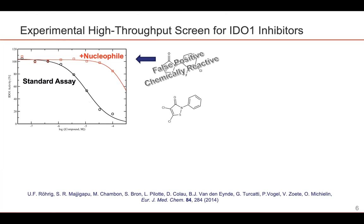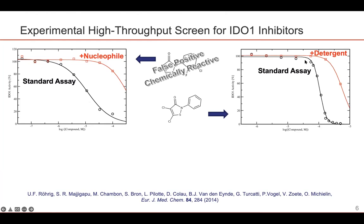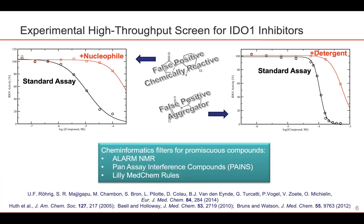The second compound, which looks chemically very similar to the first one, already showed a somewhat suspicious dose-response curve in the standard assay, because this curve was very steep. And indeed, when we added a detergent to the assay solution, it lost most of its activity again. This is a very strong indication of an aggregator — a false positive which acts through aggregation. Of course, these experimental validations are quite time-consuming and tedious to do. So we turned to using cheminformatics filters in order to try to predict compounds that would act through promiscuous mechanisms.